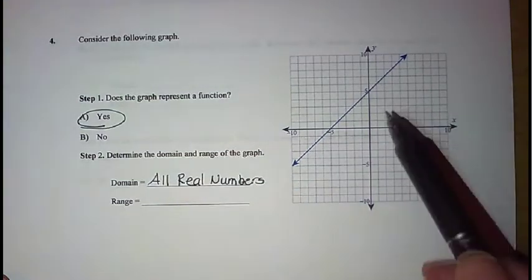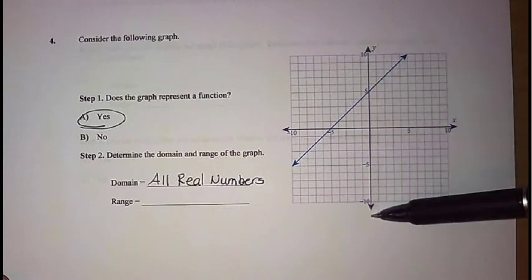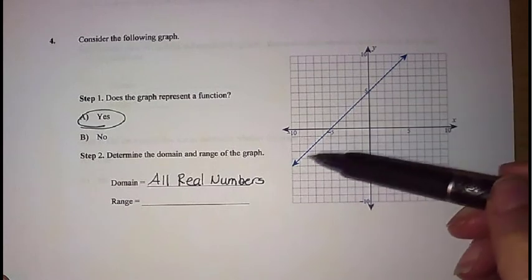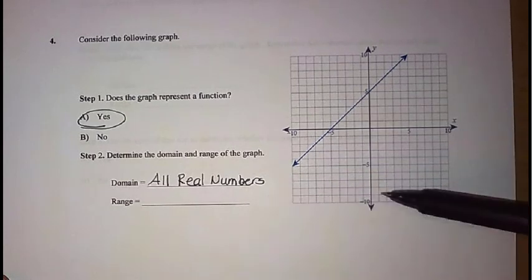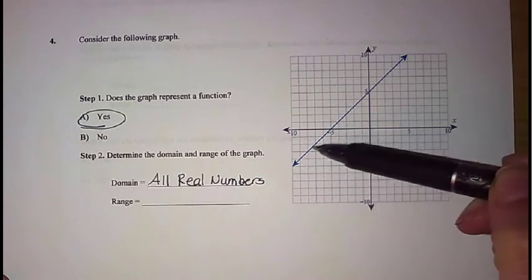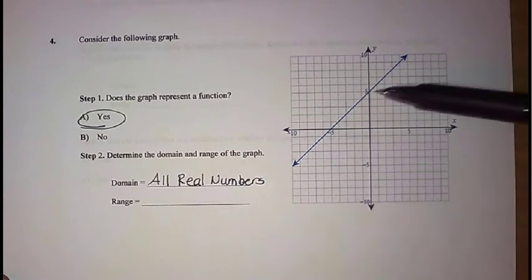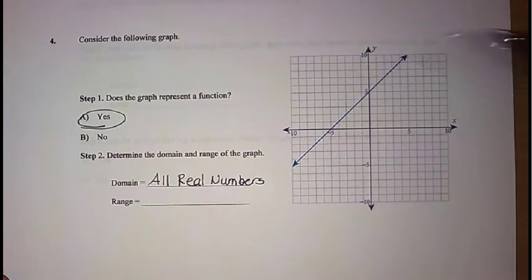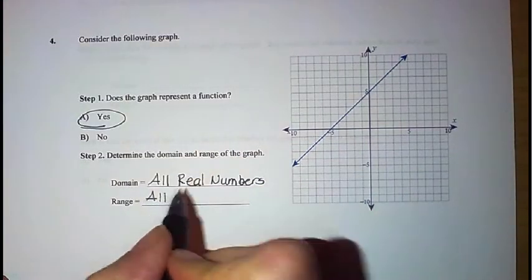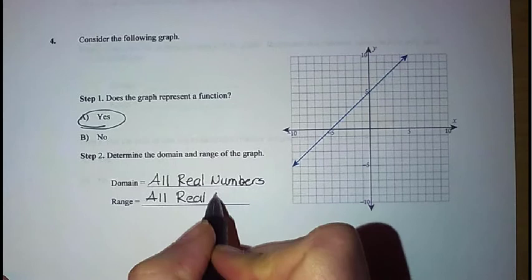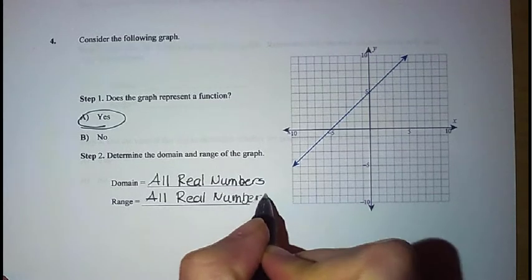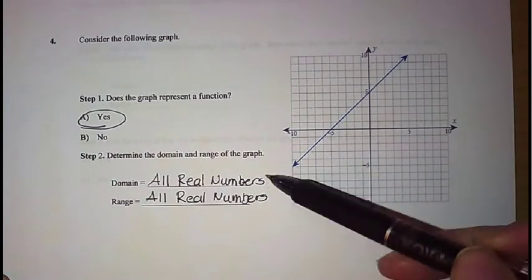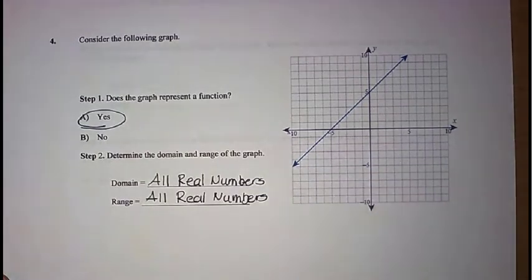And our range, again, thinking about our up and down movement as we go along our y-axis, as we move down on our x-axis, notice again, my graph is dropping down as it goes. So all of these y values would have a corresponding point on my graph. Same thing as I move up my graph, all of these y values would have a corresponding point on my graph. So again, my range would be all real numbers. Any time I have a straight line like I do here, not a vertical line, but just a nice straight line like this, my domain and range are going to be all real numbers because everything is going to get used by that one graph.